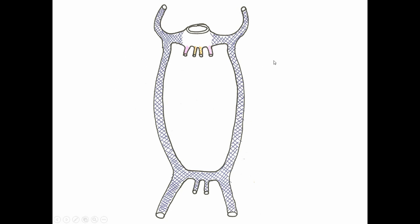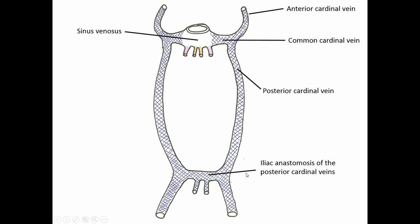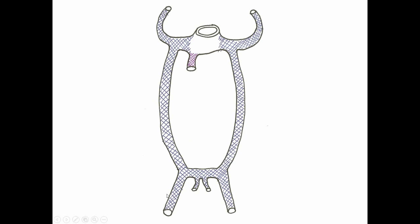Now we'll take a step back and look at the anterior and posterior cardinal veins feeding into the common cardinal vein and how the rest of the body's venous system develops. The common cardinal veins on both sides drain to the sinus venosus, as do the umbilical veins in pink and the vitelline veins in orange. Near the developing pelvis we have the iliac anastomosis of the posterior cardinal veins — an important connection for the mature venous system. The hepatic segment of the inferior vena cava, formed mostly from those vitelline veins, is shown in red as these permutations happen simultaneously.